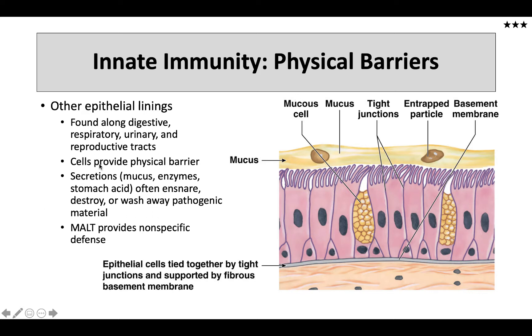So these cells providing the physical barrier, washing away the pathogens, and so forth — these are really critical to our physical barriers in the innate immune system.